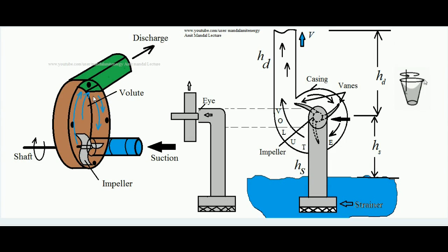The working of a centrifugal pump can be understood by the tumbler example — a tumbler containing water. Take a tumbler, put some water in it, and by the help of a spoon try to stir the water and rotate it in a particular direction. You will find that water tries to move toward the inner peripheral surface of the tumbler. The reason is that whenever any body rotates about some axis it experiences a centrifugal force, and due to that centrifugal force the body tries to move in radial direction away from the axis of rotation.